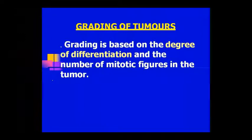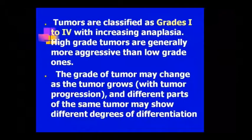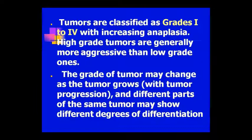The grading of the tumor is on the basis of the degree of differentiation — whether we can differentiate the cells or not. The tumor is classified from grade 1 to grade 4 in ascending order. A high-grade tumor is generally more aggressive compared to a low-grade tumor — high-grade tumors are obviously more aggressive.